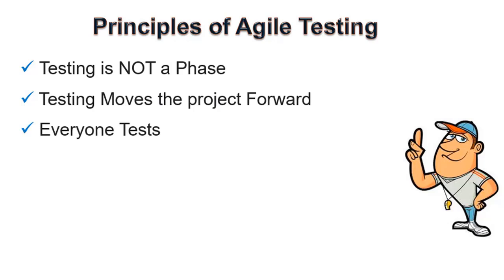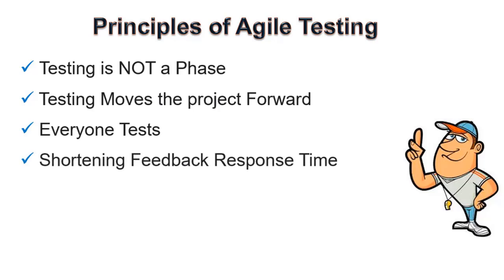Third, everyone tests. In conventional SDLC, only the test team tests, while in agile, developers, business analysts — everyone tests the application. Fourth, shortening feedback response time. In conventional SDLC, only during acceptance testing does the business team get to know about product development, while in agile, for each and every iteration they are involved. Continuous feedback shortens the response time and the cost involved in fixing bugs is also less.